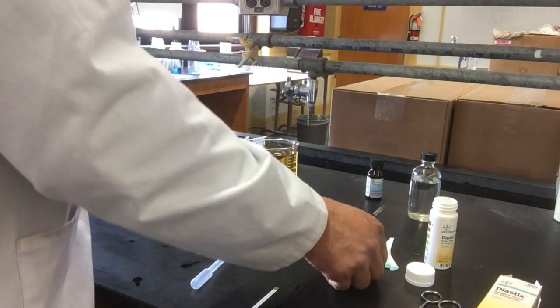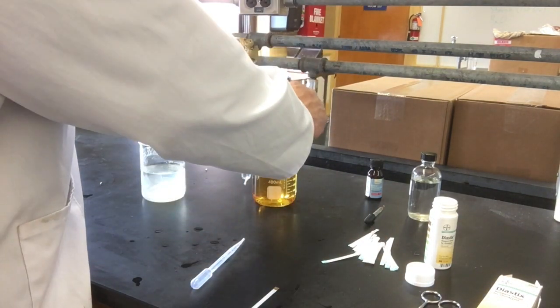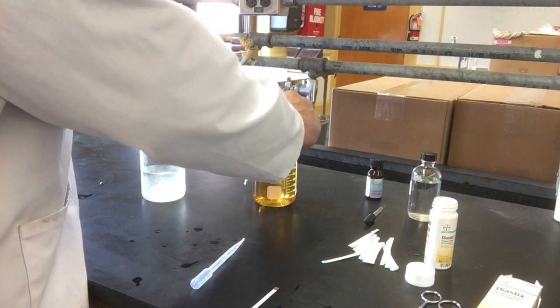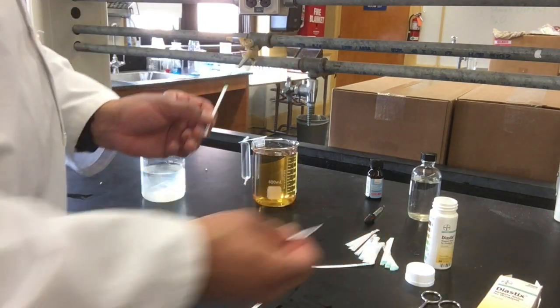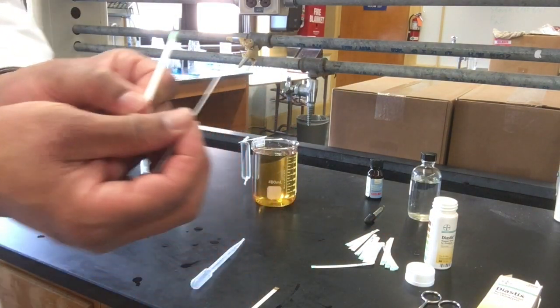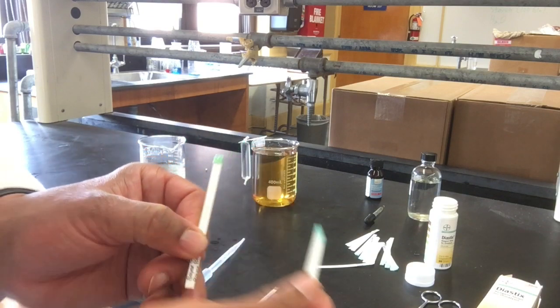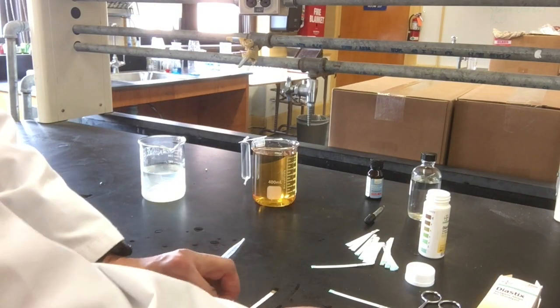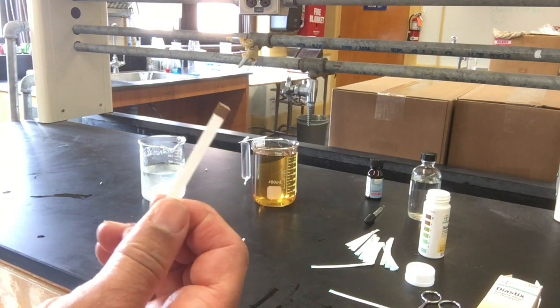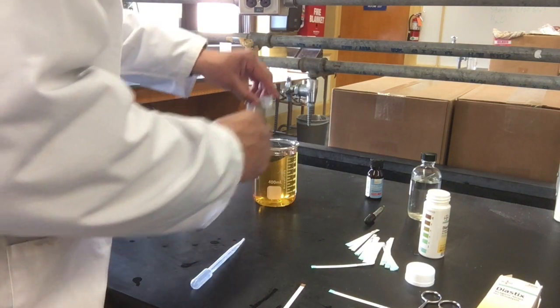Since I'm interested in glucose, starch, and iodine, I'll test the beaker with my dye stick. Looking at the color change, I don't see much change. Comparing to what was in the bag—this nice dark brown color—the bag has glucose present, but the beaker does not.